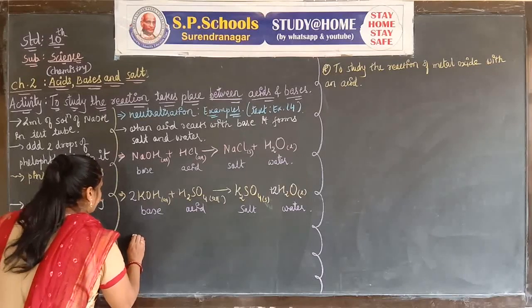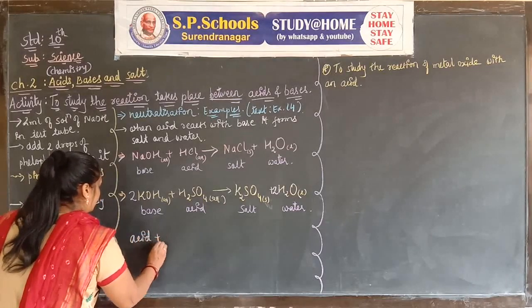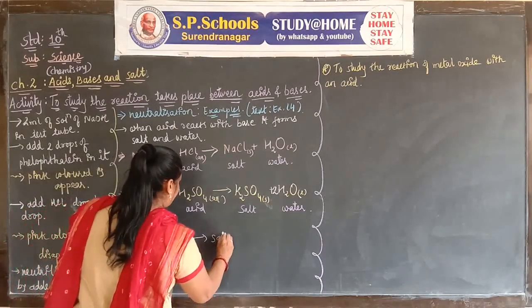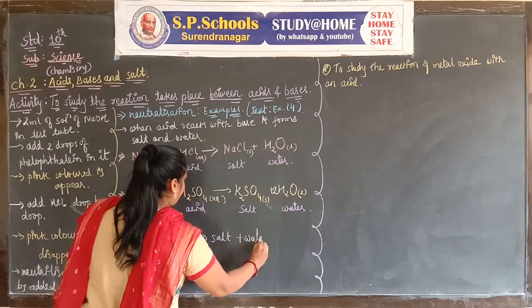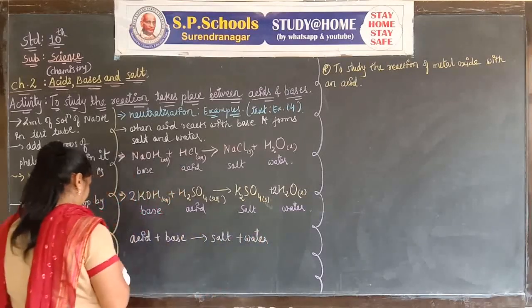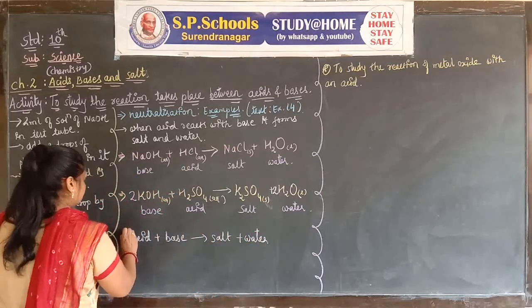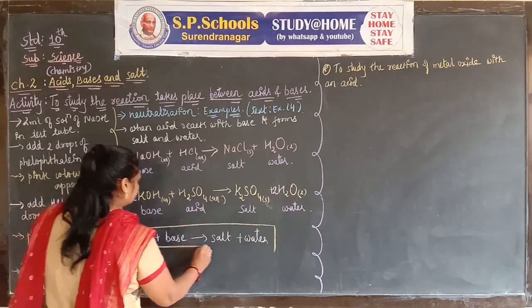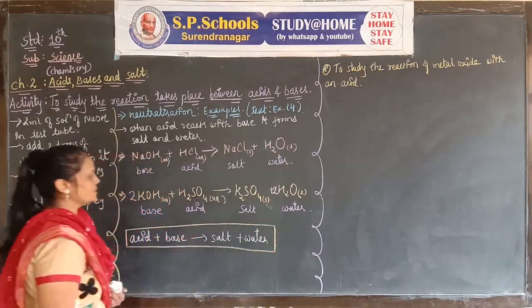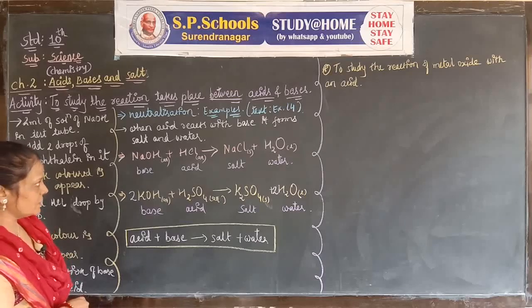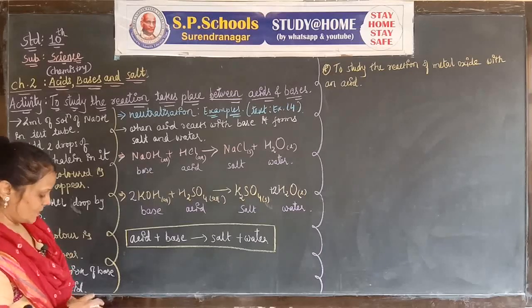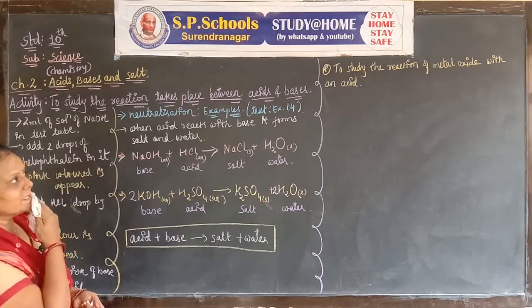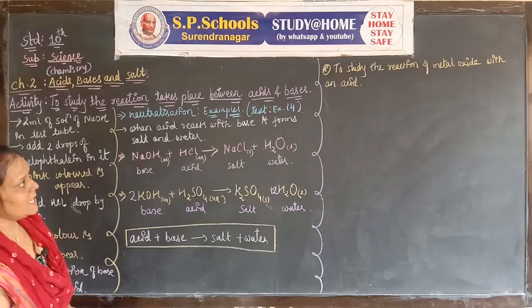In word form: when acid reacts with base, salt plus water is formed. Now let's see another activity: to study the reaction of metal oxide with an acid. We take the example of metal oxide as copper oxide, CuO.